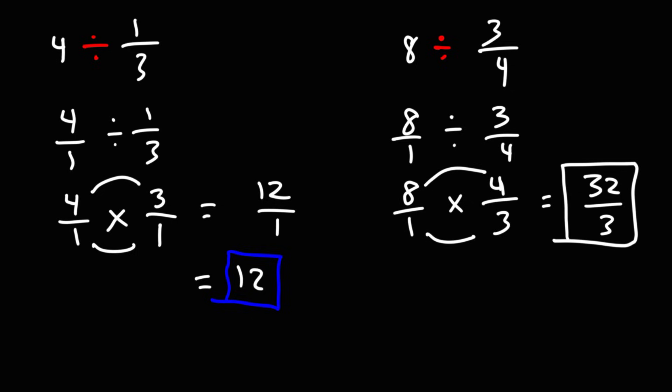To convert the improper fraction to a mixed number, we could say 3 goes into 32 ten times. 3 times 10 is 30. 32 minus 30 is 2. So it's 10 and 2 thirds as a mixed number.